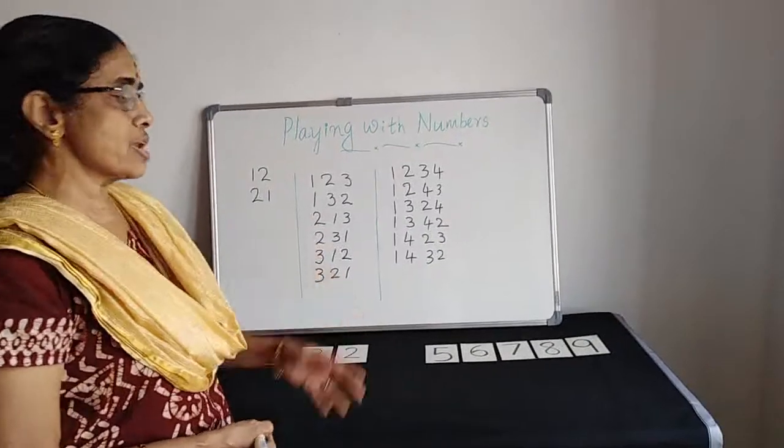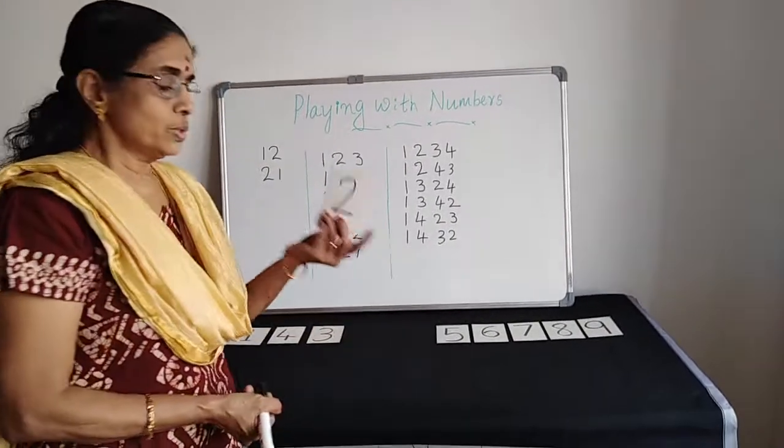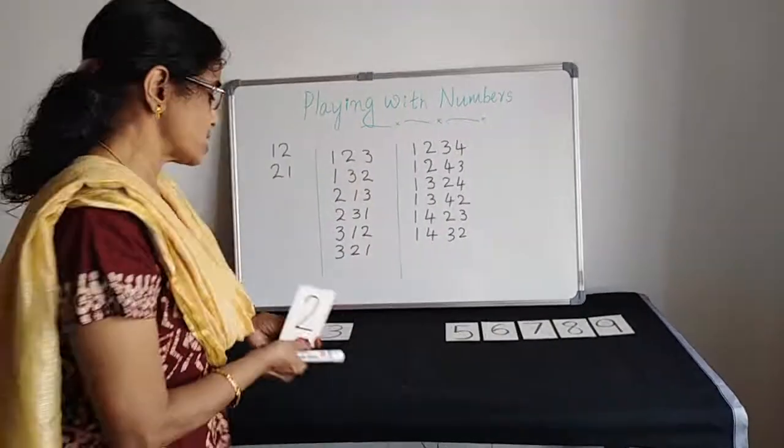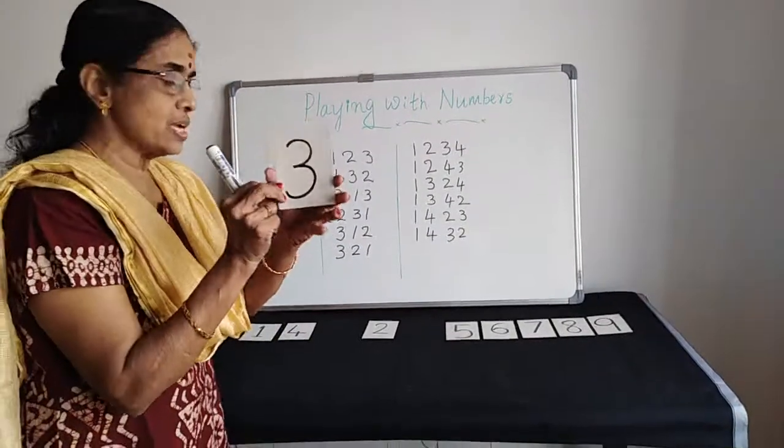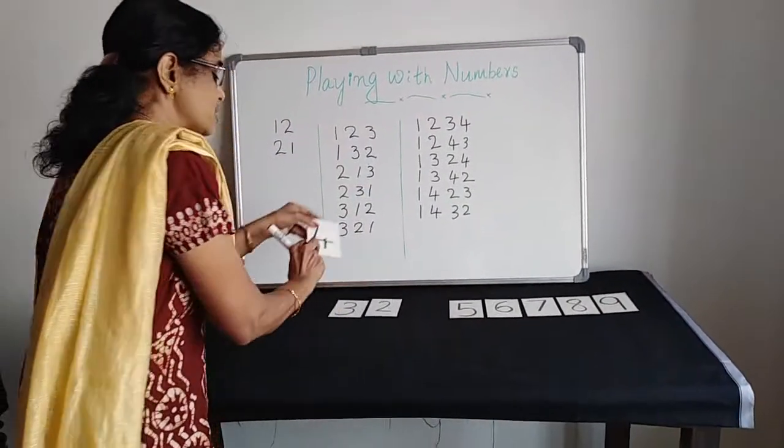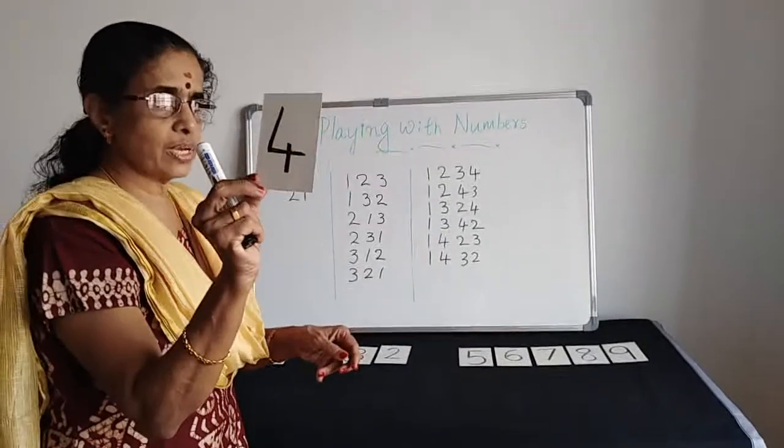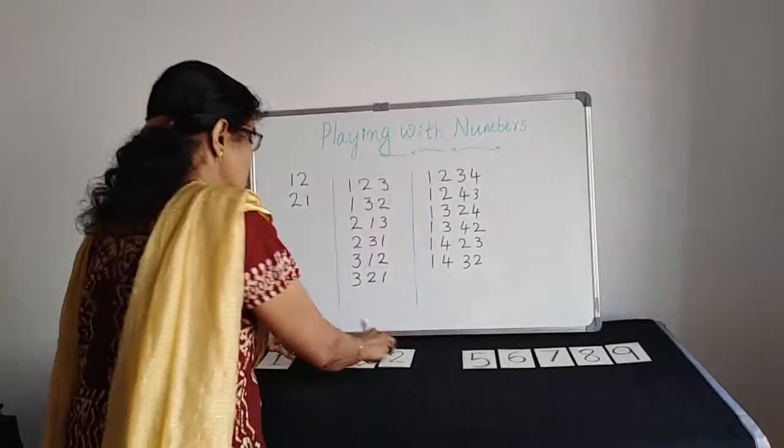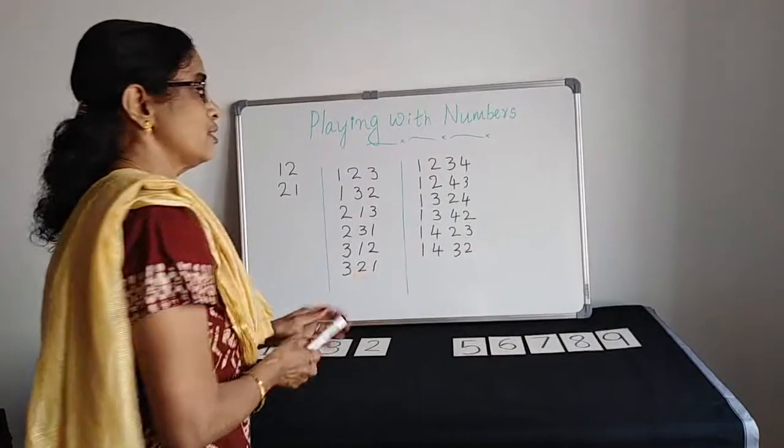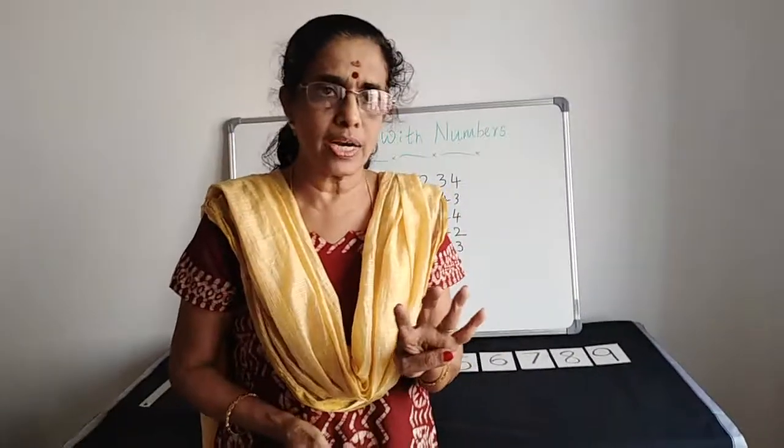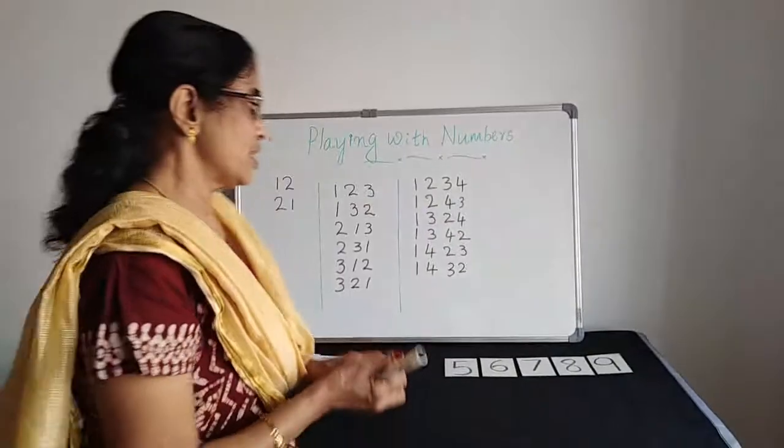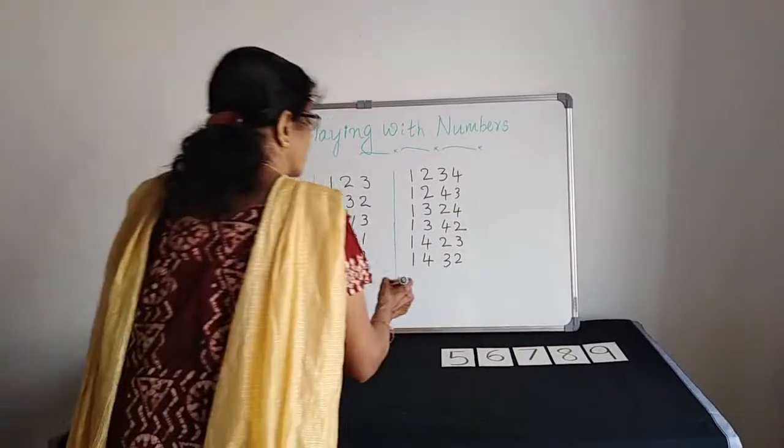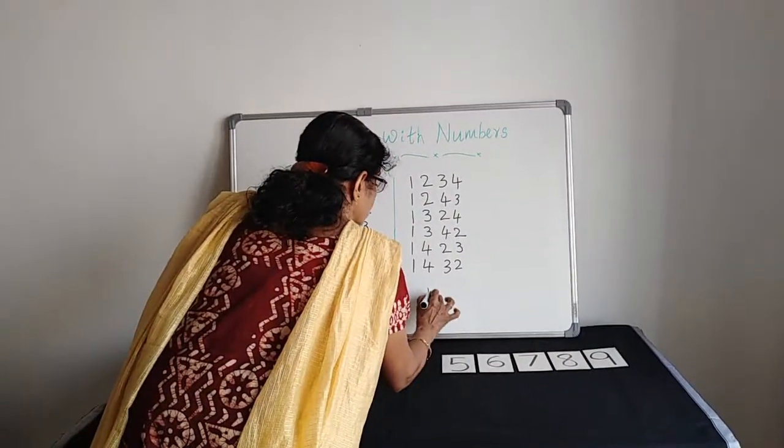Now again you can make 6 numbers starting with 2. There are 6 numbers. Again you can make 6 numbers starting with 3. Again you can make 6 more numbers with 4, starting with 4. So how many numbers totally? We are taking 4 cards, making 4 digit numbers. Without repeating we can make. There is an easy method how many numbers we can make.